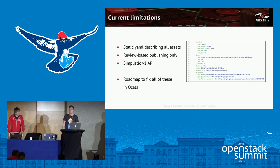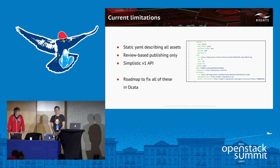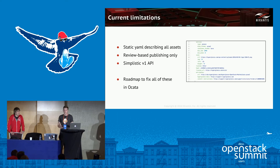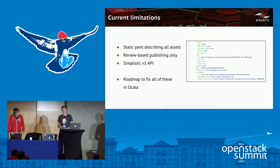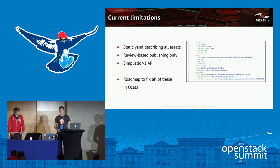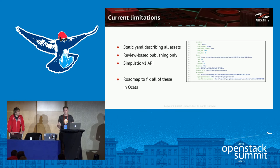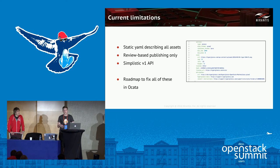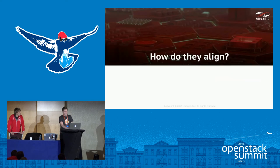There's a Horizon dashboard plugin available that allows you to do that from inside your cloud. However, there are some current limitations. The main one is that all assets are described in a big static YAML. The way to add an asset is review-based — you have to submit a review and know a bit about the OpenStack review process. There's a simplistic V1 API to retrieve things, but it doesn't yet allow uploading through the API. Those things are road-mapped to be fixed in Ocata.